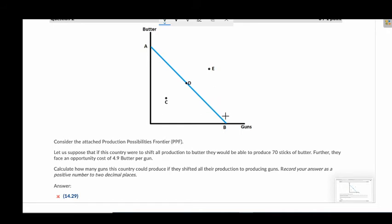If not, let's get started. So what do we have here? We have 70 sticks of butter. So if we did all butter, that's this value of a here. Let's update that we have 70 sticks of butter. Further, we have an opportunity cost of 4.9 butter per gun. Does this work as our slope? Our slope is rise over run. So our slope is butter over gun. So yeah, this is our opportunity cost and it is also our slope. Keeping in mind, I'm writing it here positive, but it is a downward sloping line. So technically, this is a negative slope.